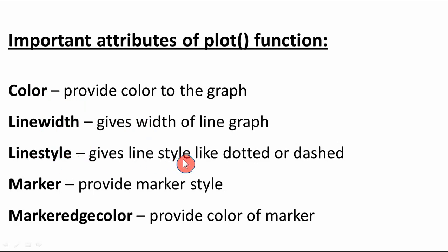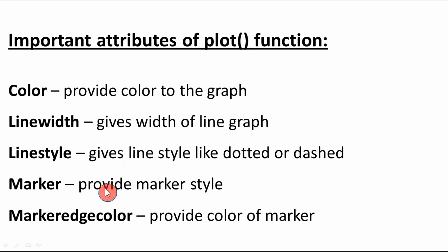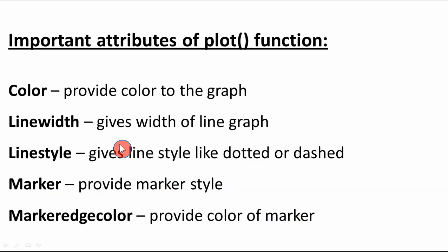If you don't specify linestyle, by default it will be a normal line without any dot or dash. If you set linestyle to dotted or dashed, the line will look accordingly. The marker attribute defines the point on the line graph — the x and y coordinate point. You can provide a marker style, and marker edge color allows you to define a color for that marker. These are the important attributes of the plot function that we will use while drawing line graphs.